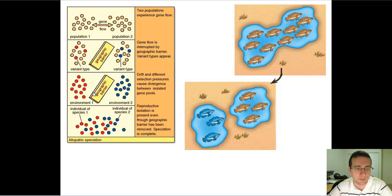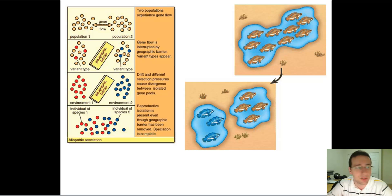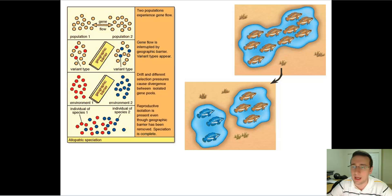Let's start talking about allopatric speciation. The concept here is that you have two populations which can interchange genes as much as they want — they can have offspring with each other. A good example would be the American population and the Russian population. Although separated by thousands of kilometers, the populations can still have children with each other, especially in modern society with the internet, globalization, and air travel. So gene flow can continue between the populations.